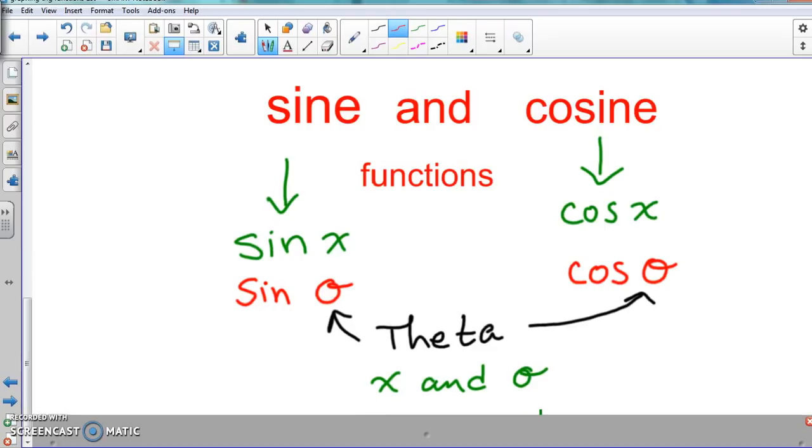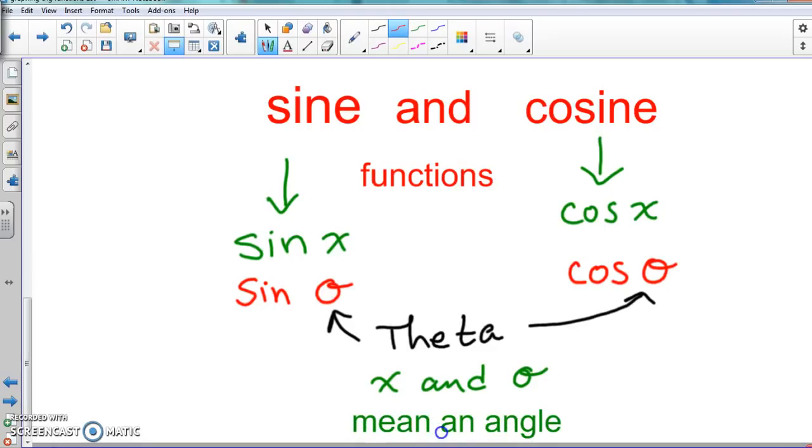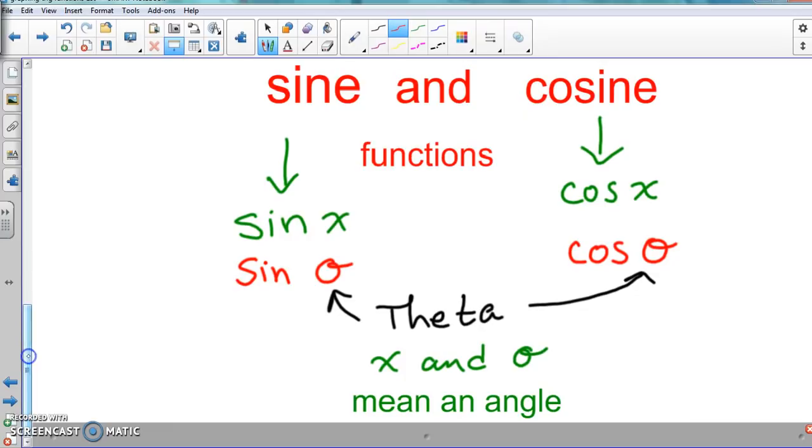And X and theta just mean an angle. So that's not anything fancy or something humongous that you have to know. X and theta are just angles. They might throw a beta or gamma in there, but it only means an angle. So anything after sine or cosine are considered angles or transformations that go with those angles.